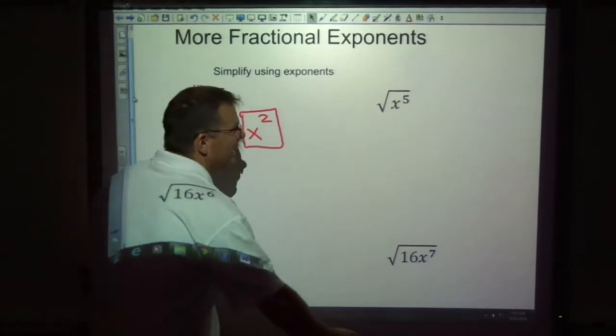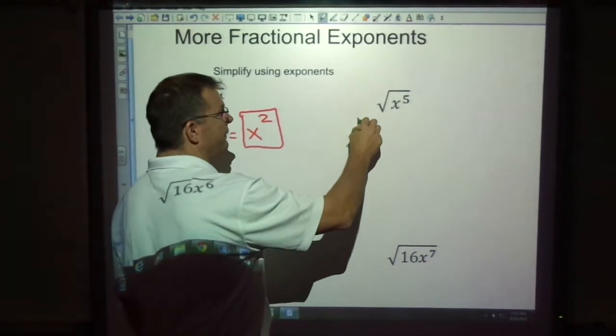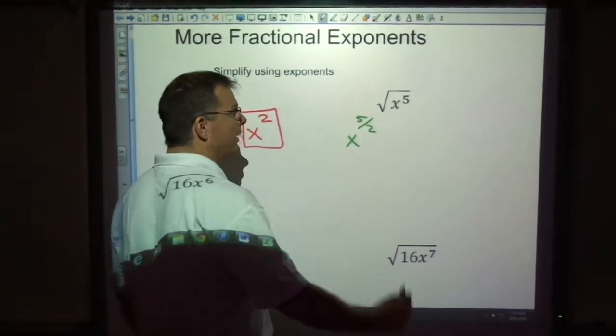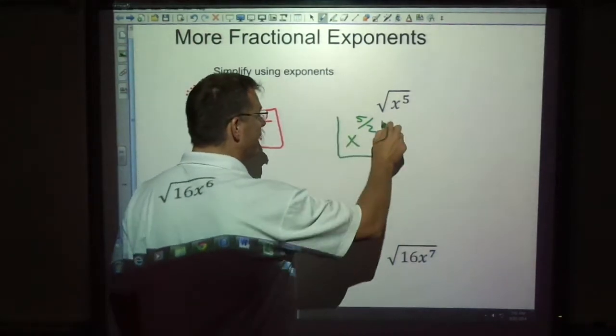Now this one, x to the fifth, very similar. We would say this is x to the five over two power. And if our directions were just to leave it with exponents, then we are done. This is the simplified form.